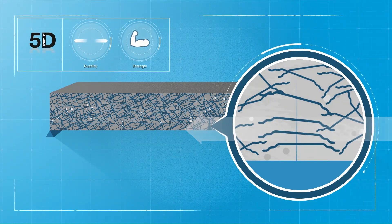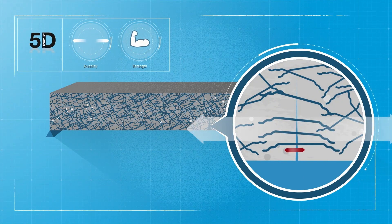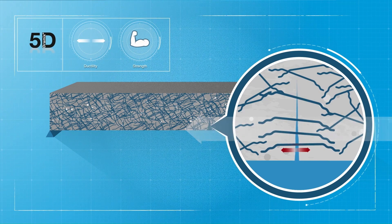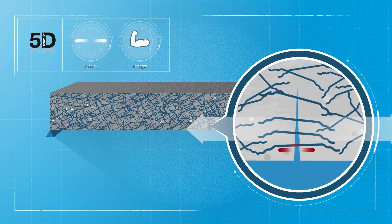Here, the hooks never pull out from the concrete. As the stress increases, the wire slowly elongates until it reaches its maximum strength.